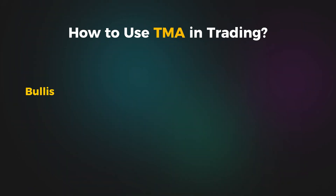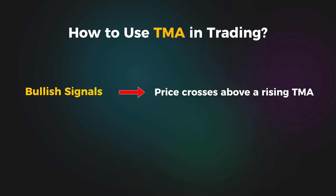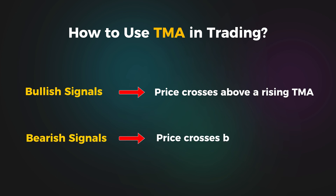When the price crosses above a rising TMA, it signals a potential buying opportunity. Conversely, crossing below a falling TMA can indicate a bearish signal. But remember, the TMA is slower to react, making it best for capturing long-term trends.